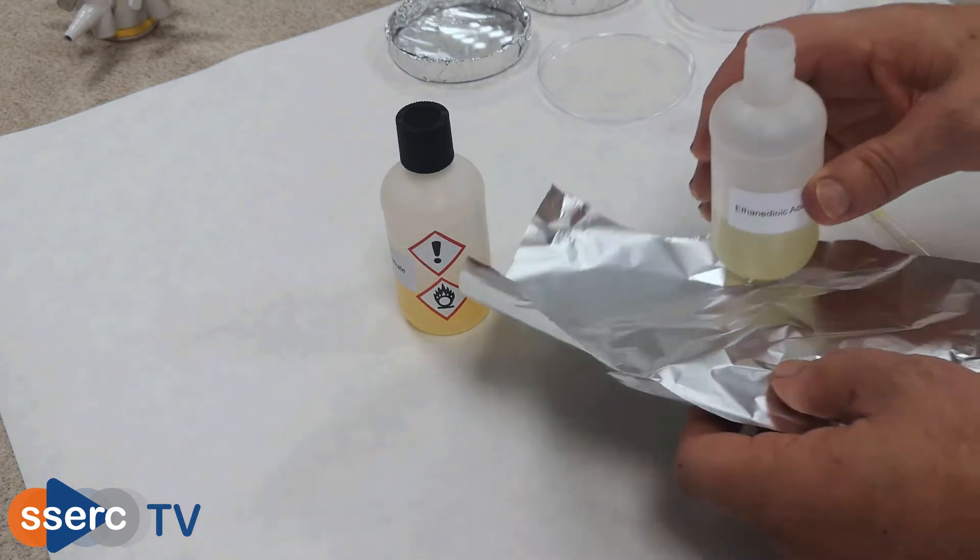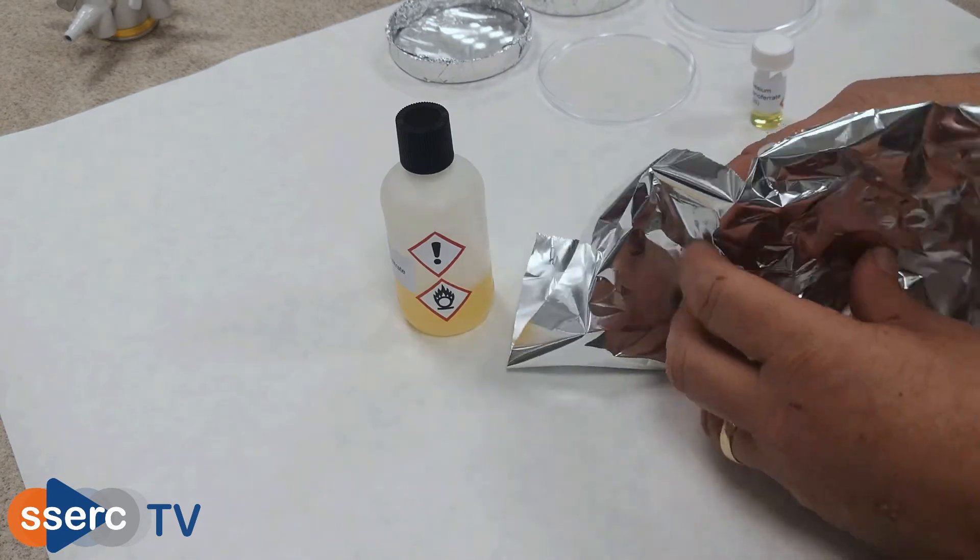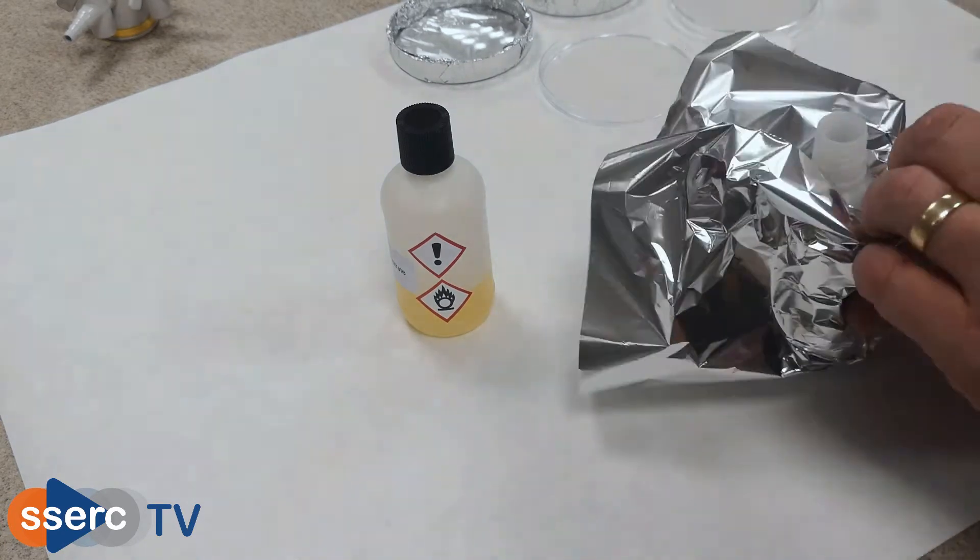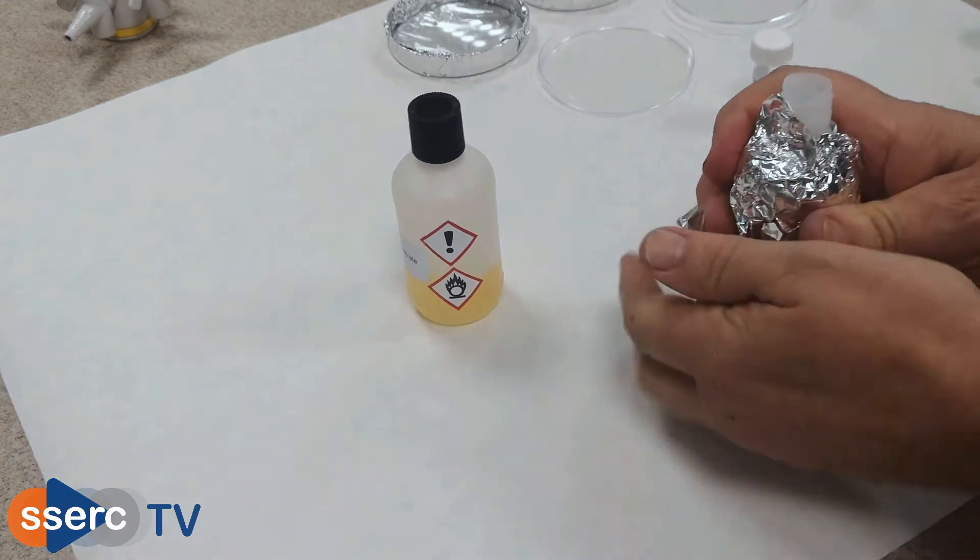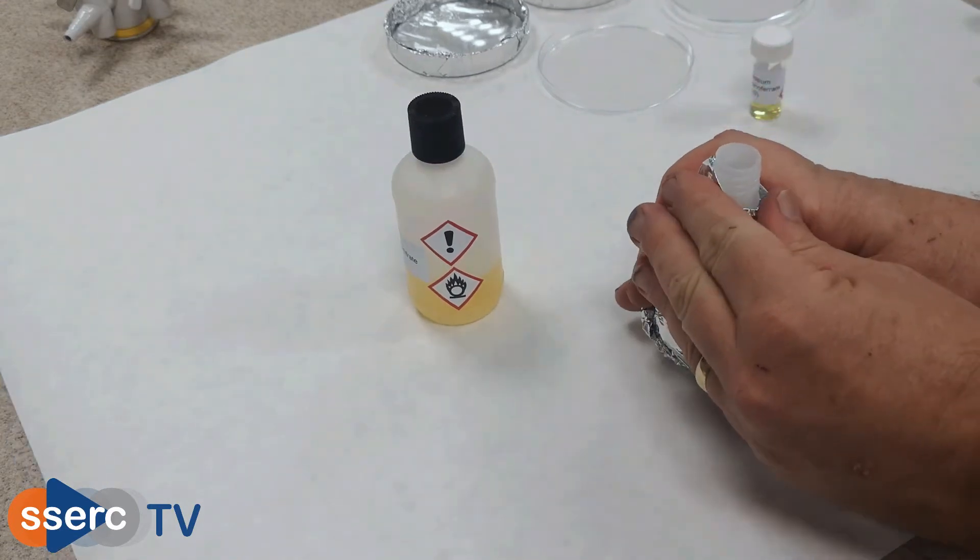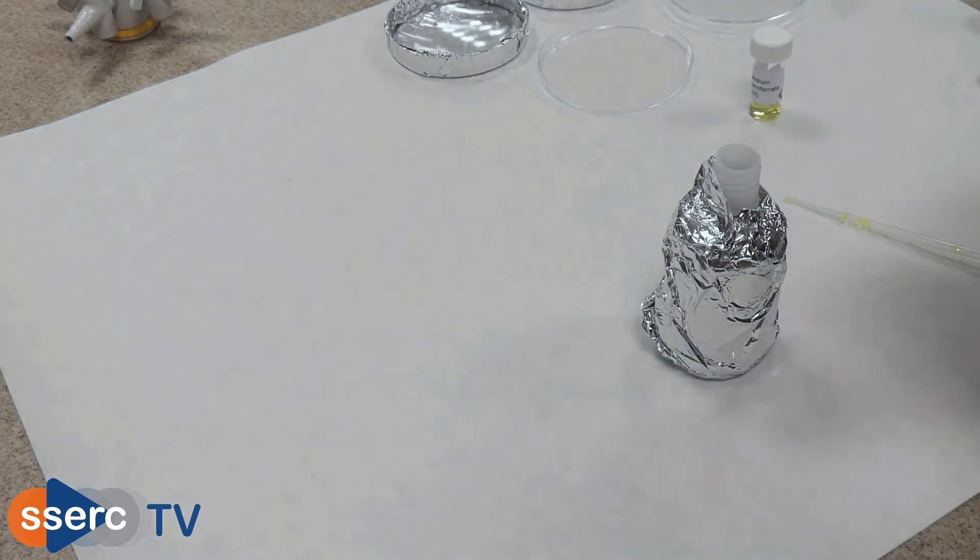Now I'm putting some aluminium foil around the bottle to keep any stray light out. You can actually do this at any time but I'd forgotten. Now pour your iron nitrate into the first bottle and give it a little swirl to mix.